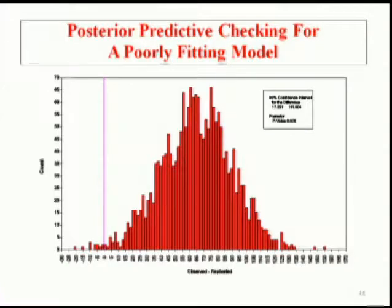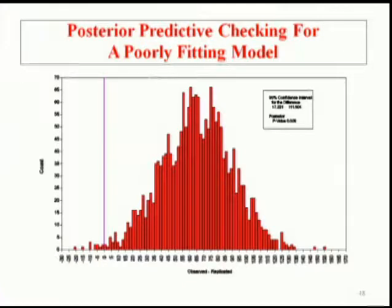When the model fits well, Bayesian books show a bivariate plot between the observed and generated data — when you have many points above the diagonal line, the model fits well. You can have nice graphics showing how you start with a bad-fitting model and the scatter moves up as the model improves.